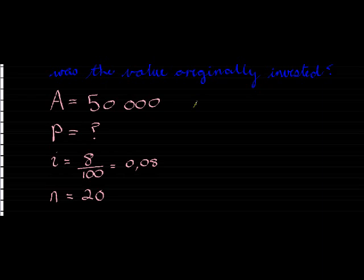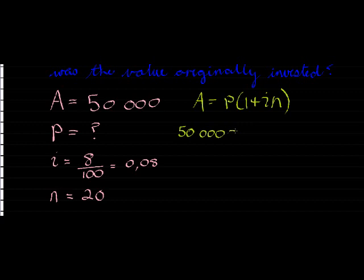Because it is simple interest, we should start by writing down our simple interest formula. Here's my simple interest formula, and I can substitute all of the values that I do know. I know my amortized value is fifty thousand. What I can do to make it simple is just simplify the bracket on the right hand side. And we see then it's actually a very simple calculation.